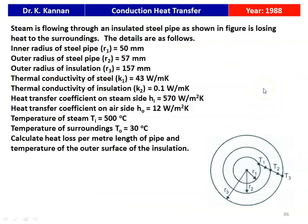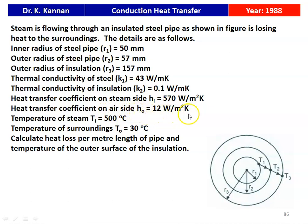The first question is from the 1988 question paper. Steam is flowing through an insulated steel pipe as shown in the figure, losing heat to the surroundings. Inner radius R1 = 50 mm, outer radius of steel pipe R2 = 57 mm, outer radius of insulation R3 = 157 mm. Thermal conductivity of steel K1 = 43 W/m·K, insulation K2 = 0.1 W/m·K. Inside heat transfer coefficient Hi = 570 W/m²·K, outside Ho = 12 W/m²·K. Steam temperature Ti = 500°C, surrounding temperature To = 30°C. Calculate heat loss per meter length and temperature of the outer surface of insulation.